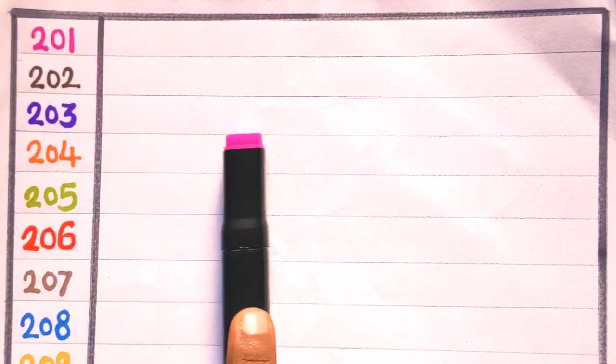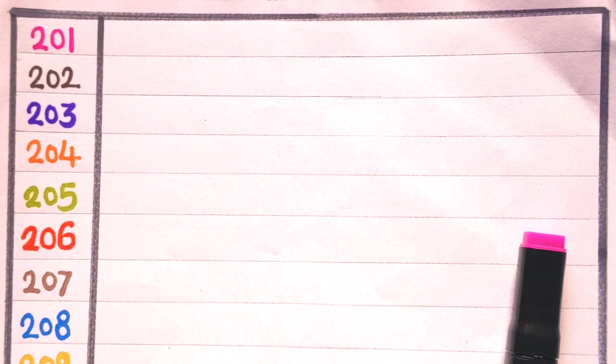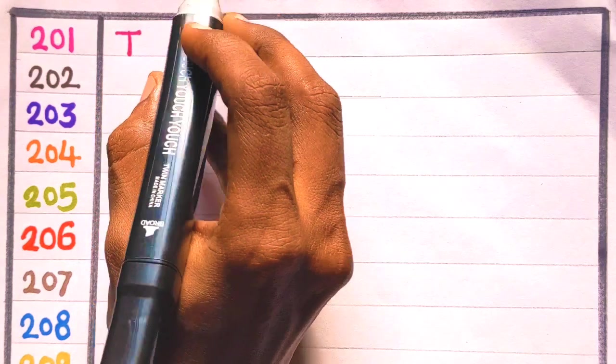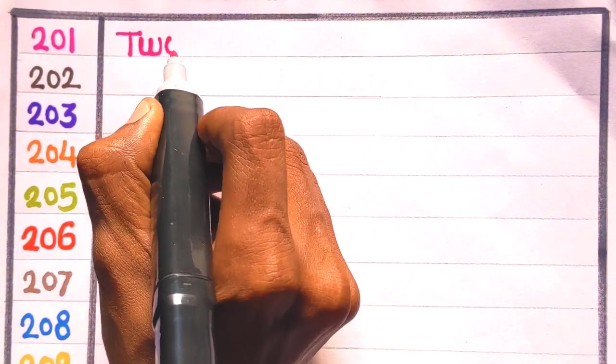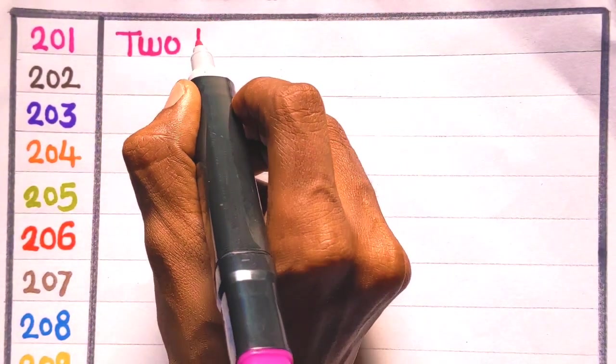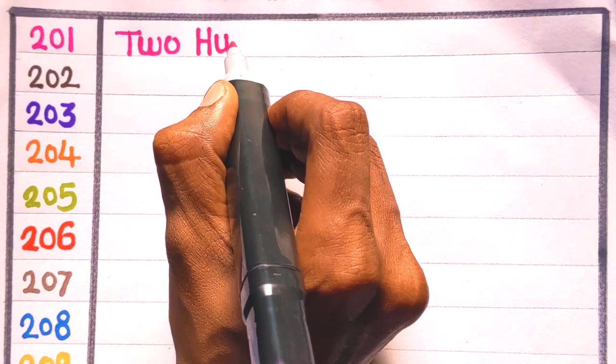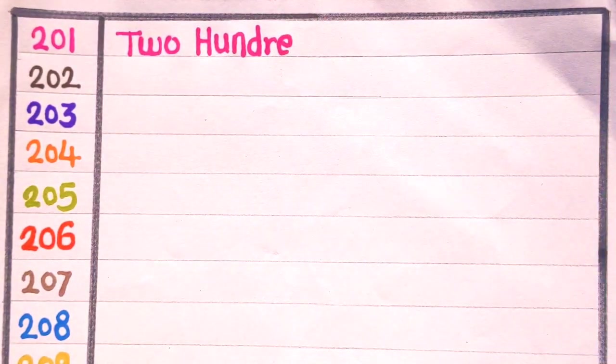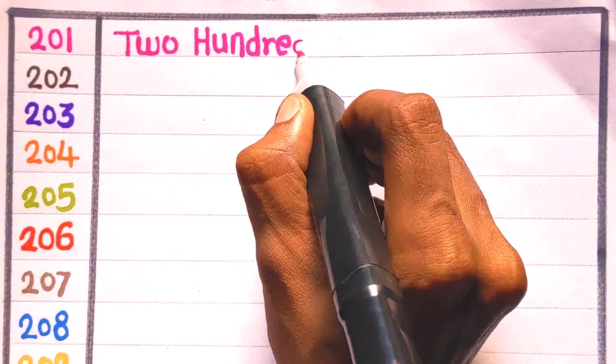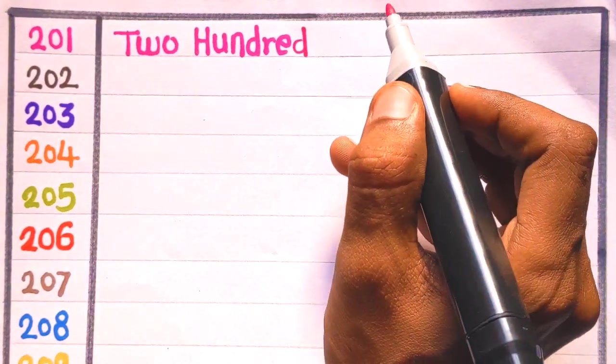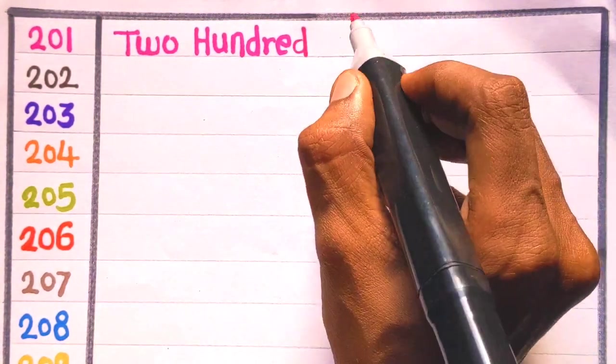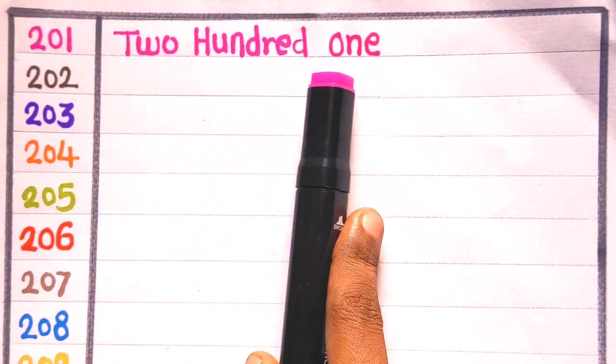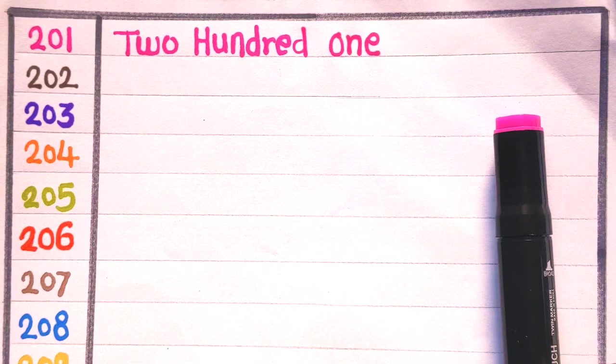At first, 201 is 201. T, W, O, 2, H, U, N, D, R, E, D, 100, O, N, E, 1, 201. With the pink color.